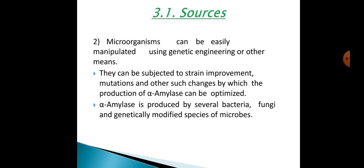The second advantage is that microorganisms can be easily manipulated using genetic engineering or other means. They can be subjected to strain improvement, mutation, and other changes by which the production of alpha-amylase can be optimized. Alpha-amylase is produced by several bacteria, fungi, and genetically modified species of microbes.